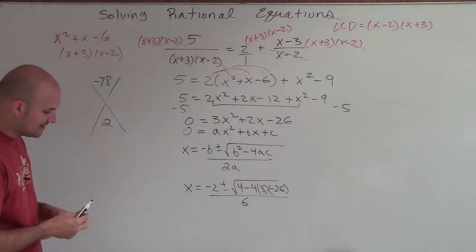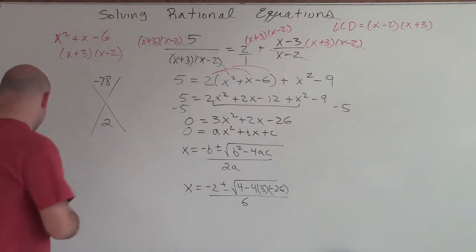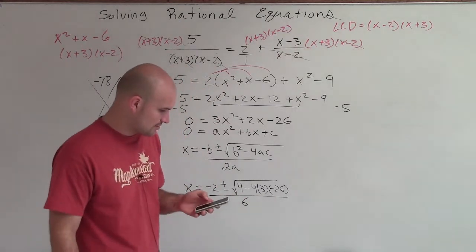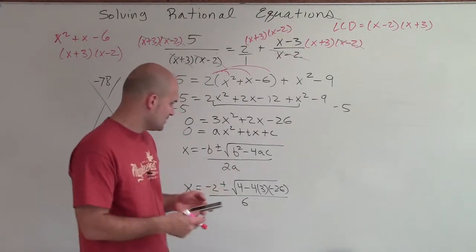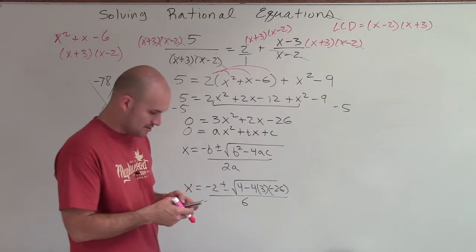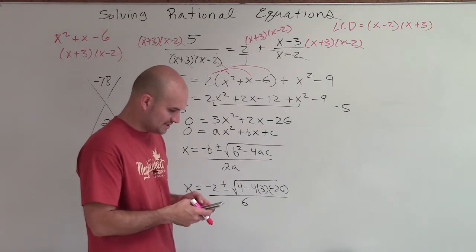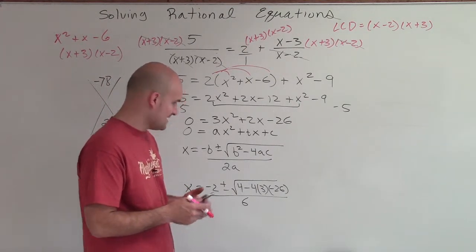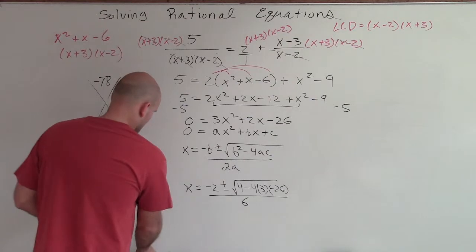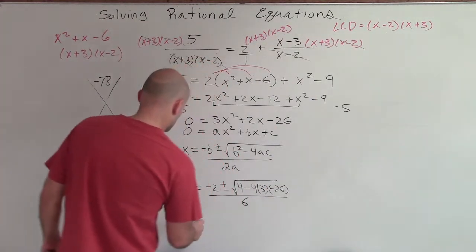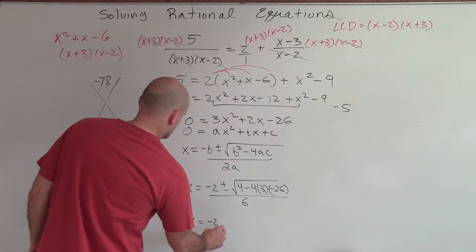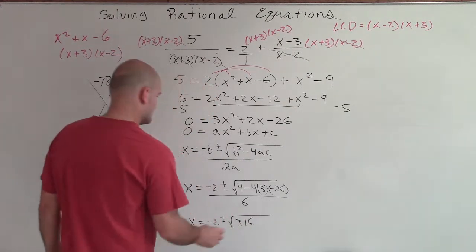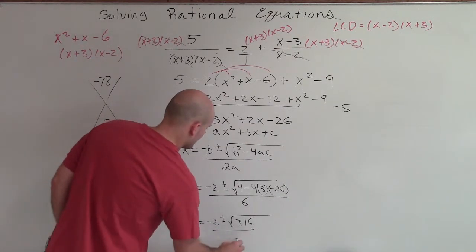All right. So now what I need to do is go ahead and determine what's going to be in that discriminant. So rather than using everything in here, let's go ahead and do this. So I have 4 times 3 times 26. That's going to be 312, positive 312. So it's going to be a 316 divided by 6.